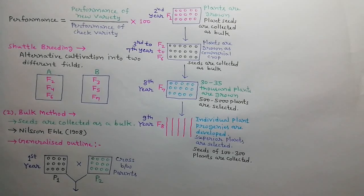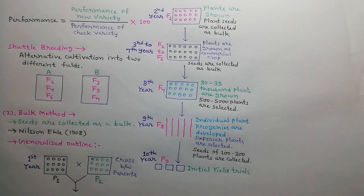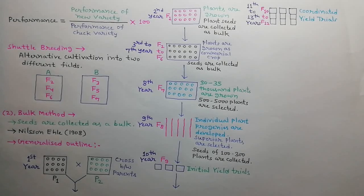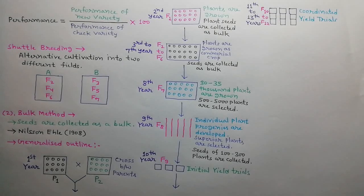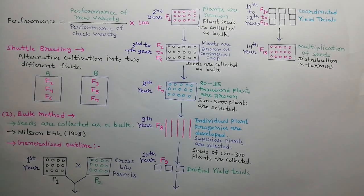In the ninth year, F8 generation is raised by growing individual plant progenies and superior progenies are selected. Seeds from 100 to 300 homogenous progenies are collected separately in bulks. In the tenth year, F9 generation is raised and initial yield trials are performed. From the eleventh to thirteenth year, F10, F11, and F12 generations are raised and coordinated yield trials are performed. In the fourteenth year, F13 generation is raised, seeds are multiplied, and distributed to farmers.